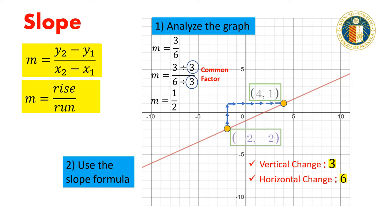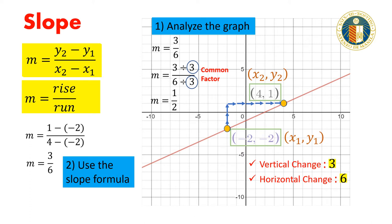Let the point negative 2, negative 2 be our x₁, y₁, and the point 4, 1 be our x₂, y₂. The slope would be equal to 1 minus negative 2, all over 4 minus negative 2, which is also 3 over 6. Simplifying, we get the slope to be equal to 1/2.